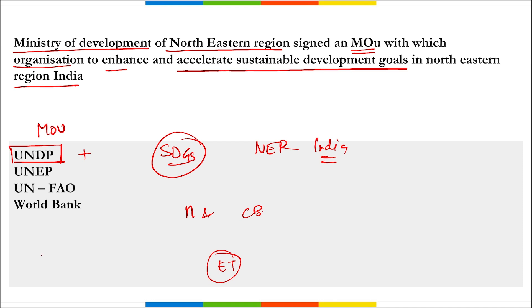Regarding UNDP, the administrator is Achim Steiner, the headquarters is in New York, USA, and it was established in 1966. The Ministry of Development of Northeastern Region signed this MOU with UNDP.